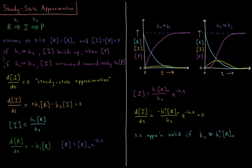Let's look at some different cases. If K1 is much much greater than K2, the intermediate will build up as K1 is very fast, waiting for K2 to happen, and then slowly over time all of that intermediate will convert to product. Alternatively, if K1 is much much slower than K2, any intermediate that is produced will instantly be consumed to product — it's just waiting to be produced to instantly go to product.